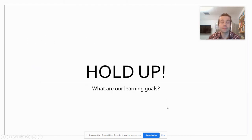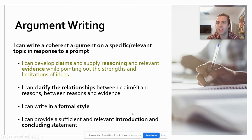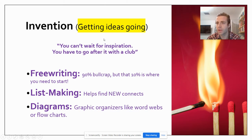Hold up — I want you to reflect on what I just talked about. Press pause and see if you can remember. Okay, these are what we're working on: claims, reasoning, and evidence; clarifying relationships between these ideas; writing in formal style; and then getting an introduction and concluding statement into our writing. So if that's our task, we've got to start thinking about how we're going to get our ideas going when given an argumentative essay where we need to make a claim and provide reasoning and evidence.